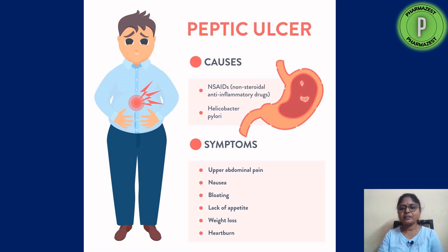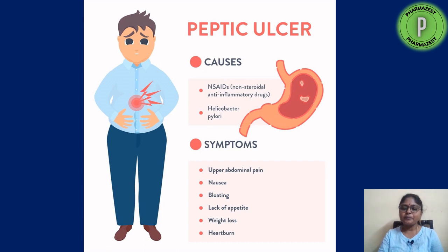Cimetidine is used in peptic ulcer disease. Peptic ulcer is a very common disorder affecting many people, which may be caused by irrational use of NSAIDs, stress, or the bacteria Helicobacter pylori. In the 1950s and 60s, people used to die because of peptic ulcer, as there was no proper medical treatment. It led to bleeding of the stomach lining, which ultimately caused death. So it was a major cause of concern.